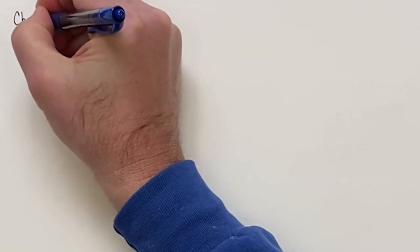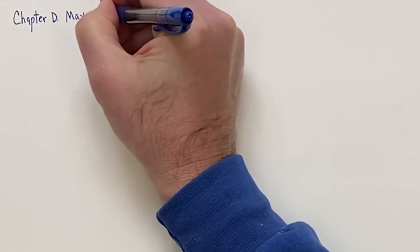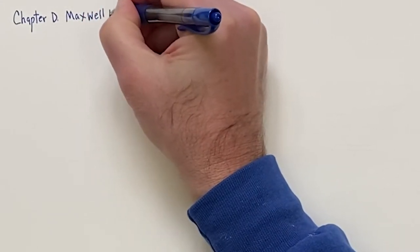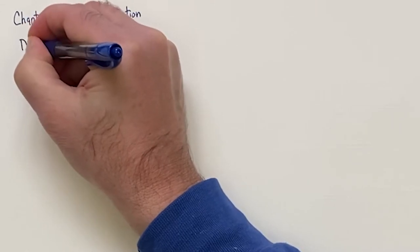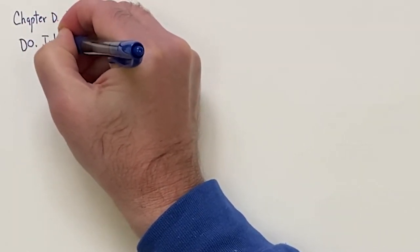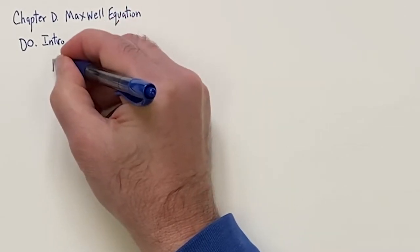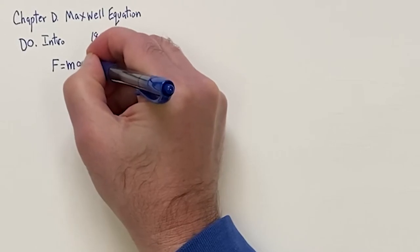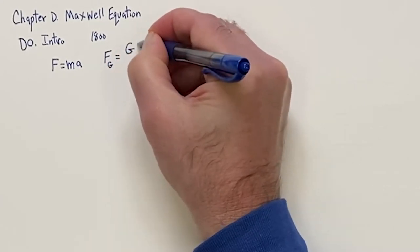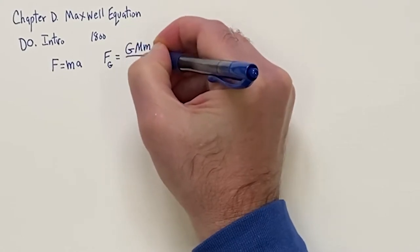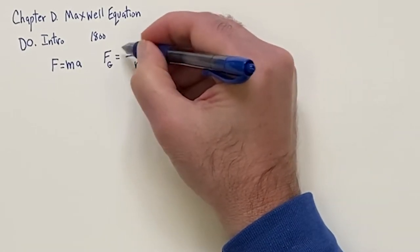Chapter D: Maxwell Equations — these involve electricity and magnetism. Around 1800, we had F equals ma, Newton's second law, and the universal law of gravitation: force of gravity equals G times M times m divided by R squared, where R is the distance from center to center. Sometimes we put a minus sign since this is an attractive force.